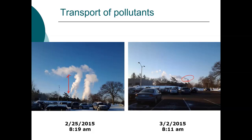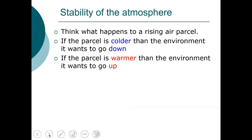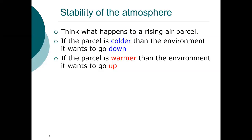We need to be able to predict how this plume will move so that we have an understanding of how these pollutants will affect human health and the environment. What we will look at is what we refer to as the stability of the atmosphere. We've been talking about rising air parcels in terms of the dry adiabatic lapse rate or the moist adiabatic lapse rate. If the parcel is colder than the environment, it tends to want to go down; if it's warmer, it tends to want to rise.